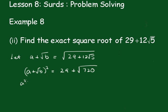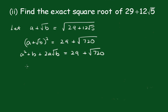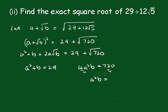So a squared plus b plus 2a root b equals 29 plus the square root of 720. Therefore a squared plus b equals 29, and taking the irrational part inside we see that 4a squared b equals 720. Dividing by 4 we get a squared b equals 180. From here we see that a squared equals 29 minus b.